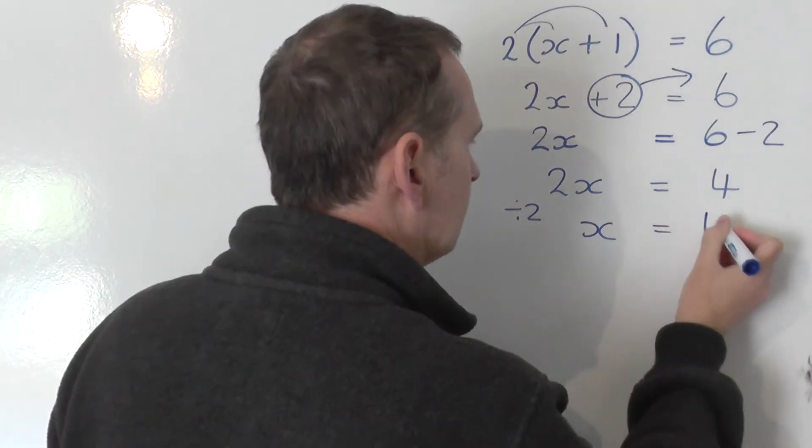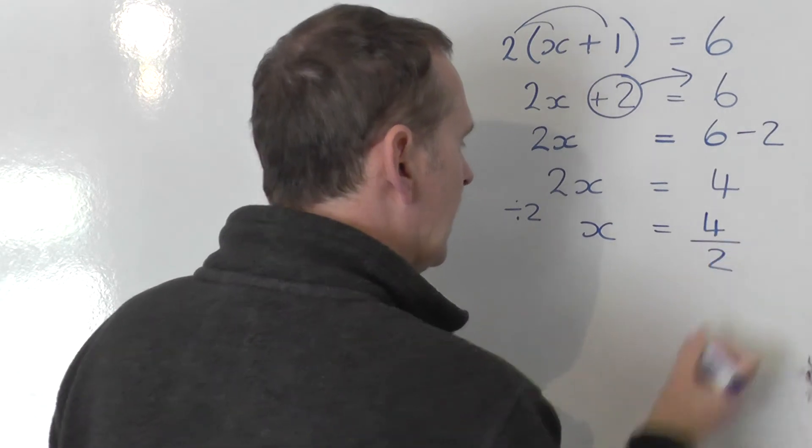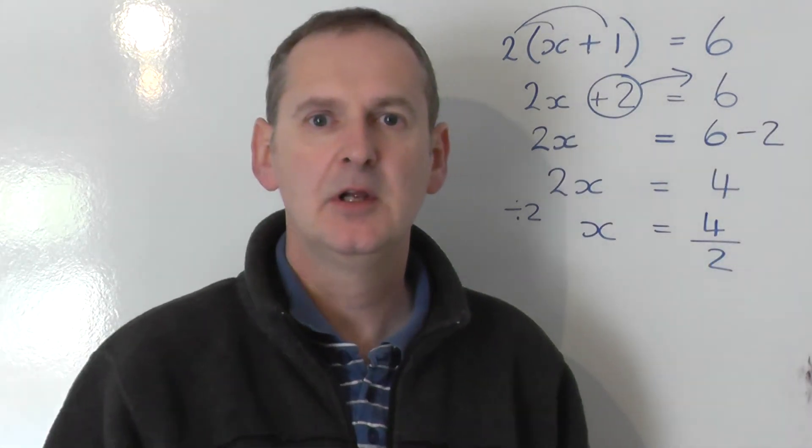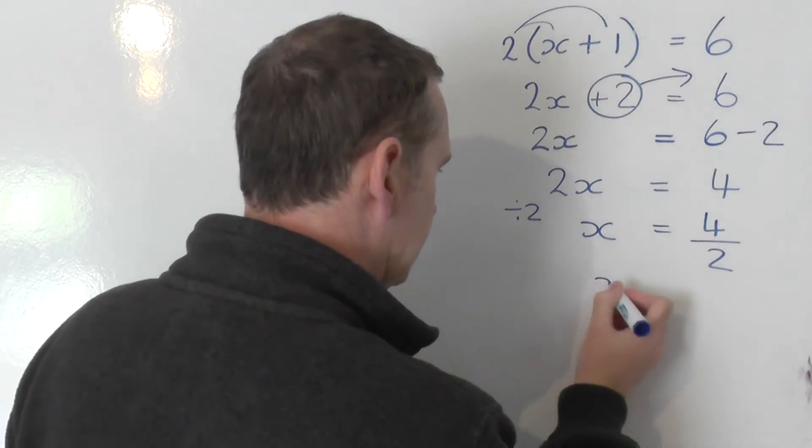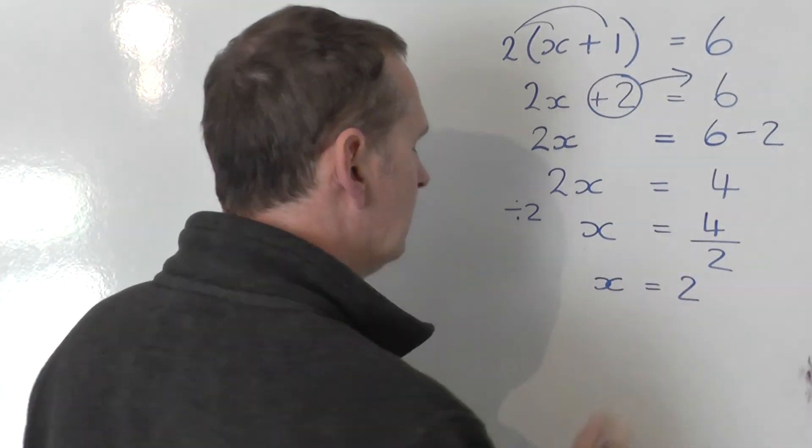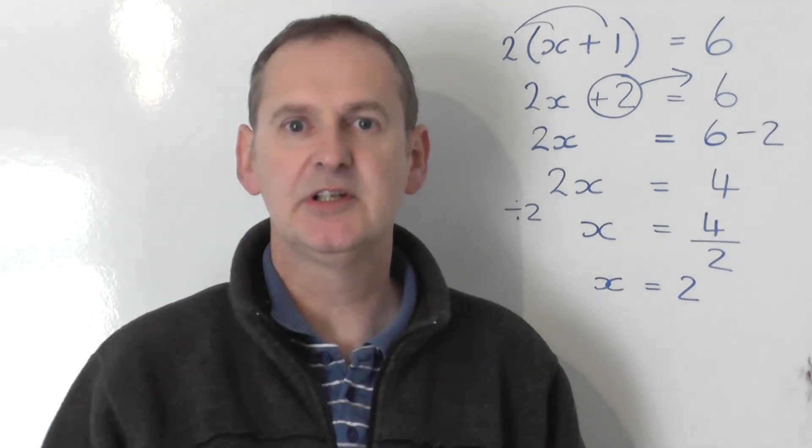So I take the 4 on the right, and I divide that by 2. And 4 divided by 2, you can actually work that out nice and easy, so the final answer is x is equal to 2. And that's the solution to this equation.